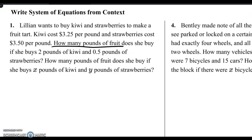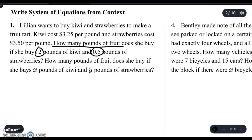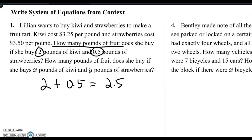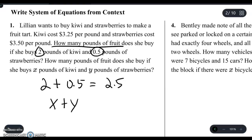And how many pounds of fruit does she buy if she bought X and Y? If you add up the pounds of kiwi and strawberries, that'll tell you everything. So we're going to add up the pounds of kiwi, which is 2, and 0.5. So kiwi is 2 plus 0.5, which adds up to equal 2.5. Now, if you want to know how much she buys if it's X pounds or Y pounds — an unknown amount — we'll just do X plus Y. This is writing the expressions, and this is preparing you for writing a system of equations.